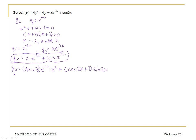So here I have yp, and I need yp prime. I'll use the product rule — here I have three different factors. Taking the derivative of my first factor gives me an a, multiplied by my other two factors, plus the derivative of my second factor e to the negative 2x, which brings a negative 2 in front. So I get negative 2 times ax plus b, times e to the negative 2x, times x squared, plus — taking the derivative of x squared gives me 2x — times ax plus b, times e to the negative 2x.